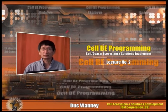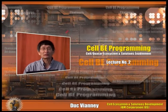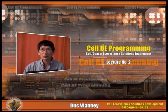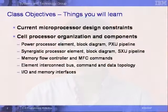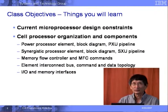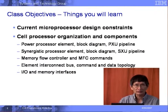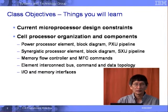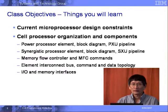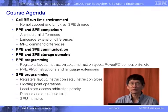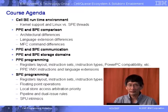This session covers the Cell BE architecture. The objectives are to give you some idea about what the architecture looks like, the difference between the Power PC, the PPE, the SPE, and all of the elements of the system: the memory flow controllers, the EIB, the Interconnect Bus, the Element Interconnect Bus. The agenda covers current microprocessor design and then the cell components.